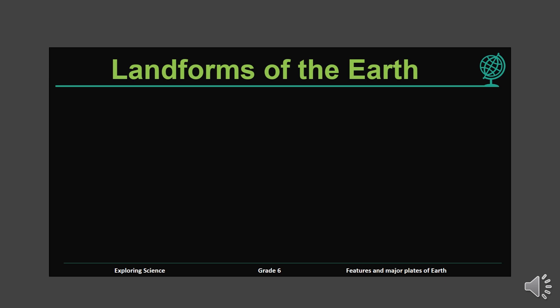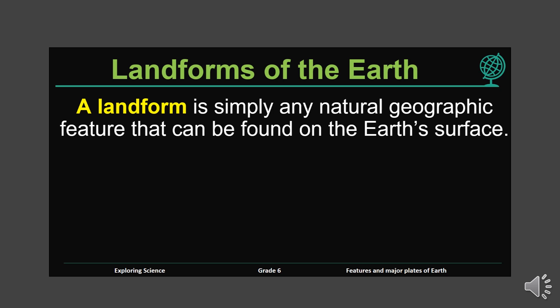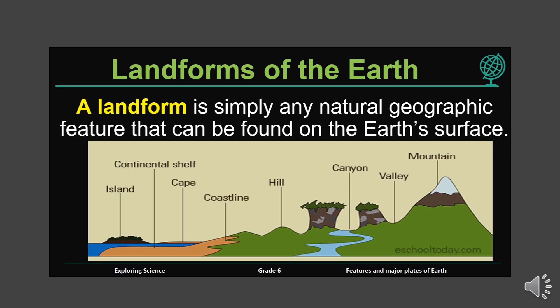Landforms of the Earth. What are landforms? A landform is simply any natural geographic feature that can be found on the Earth's surface. From the illustrated diagram you can see some examples of landforms: island, continental shelf, cape, coastline, hill, canyon, valley, mountain.